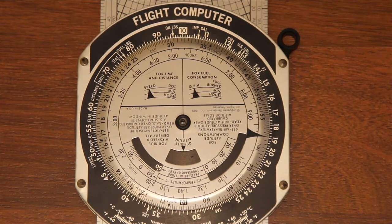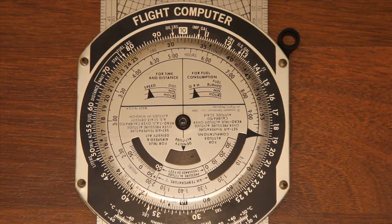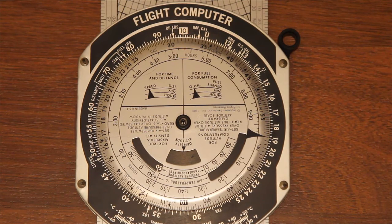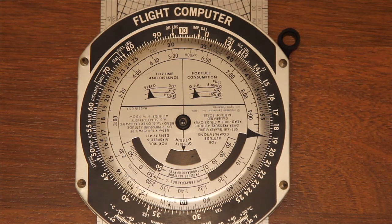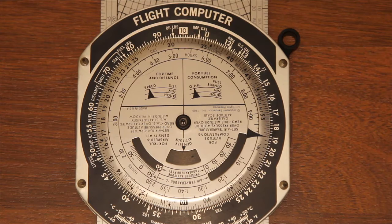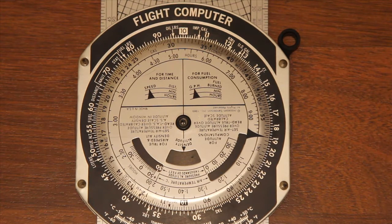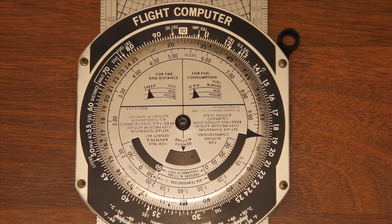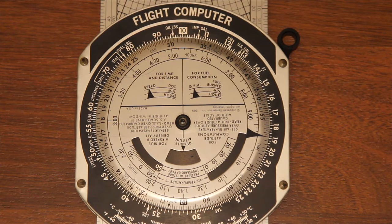So this is a Jeppesen E6B flight computer. You can buy other brands on eBay and other places fairly cheaply. The metal ones go for about $40. You can buy cardboard ones for less than $20.